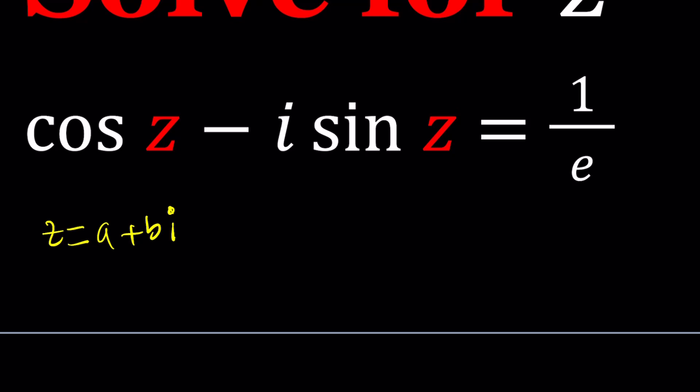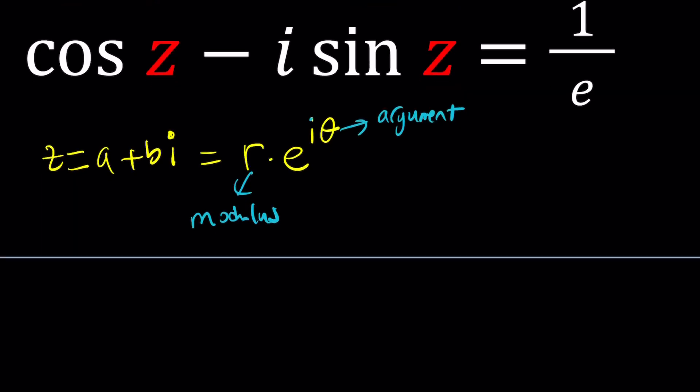Which is with the trigonometric functions or e to the power something. So this can basically be written as r times e to the power i theta, where r is called the modulus or the absolute value and theta is called the argument. Well obviously there's many values for that, but we can kind of talk about the principle argument first.